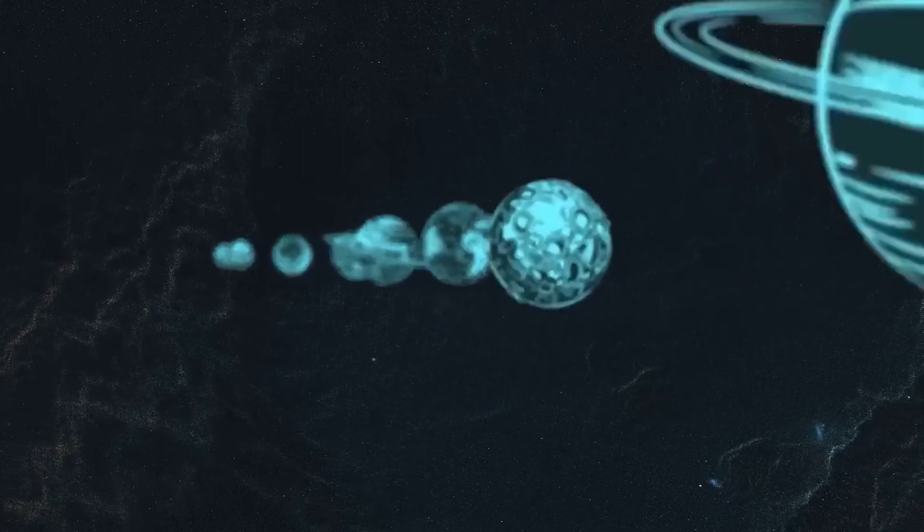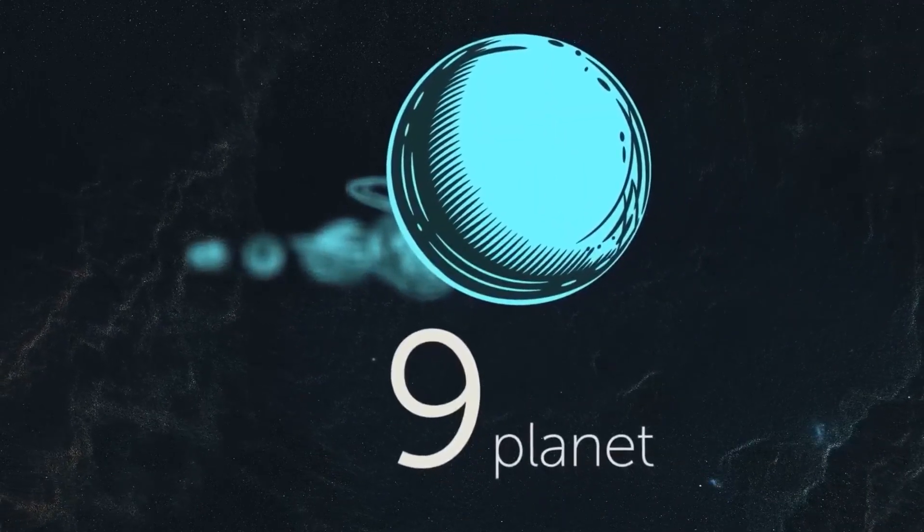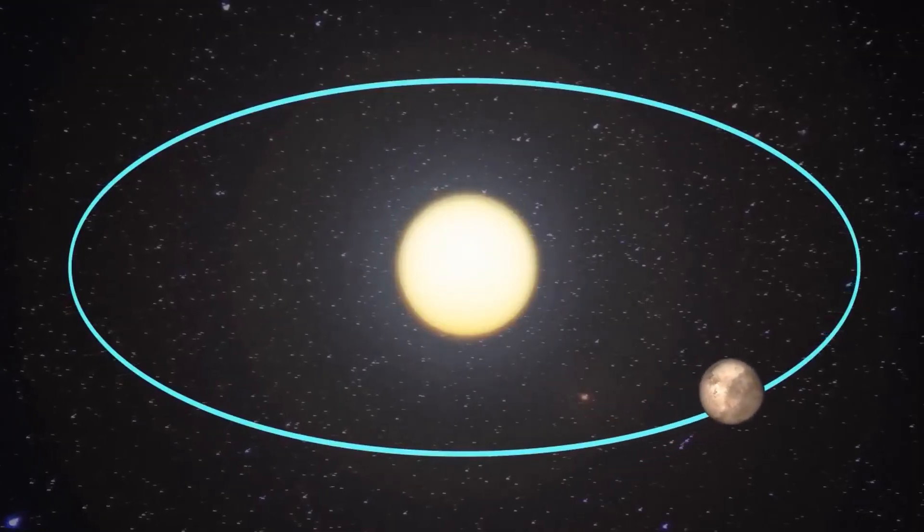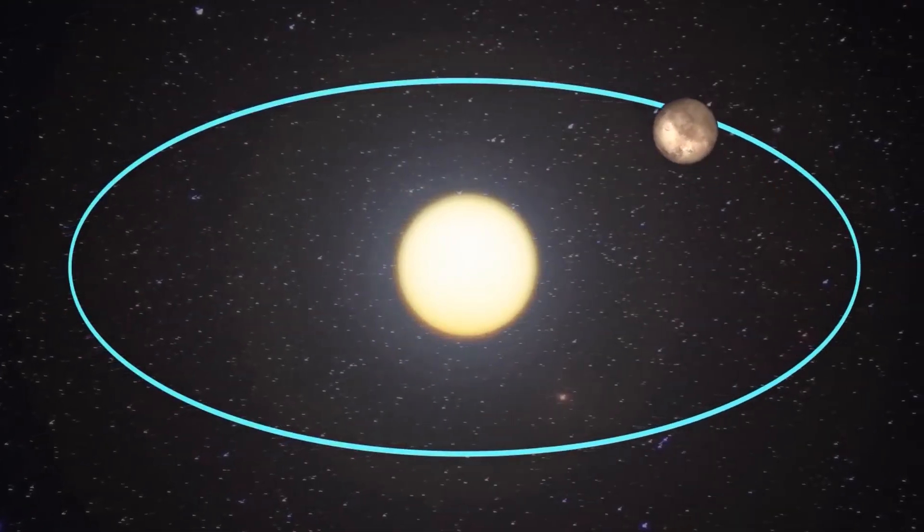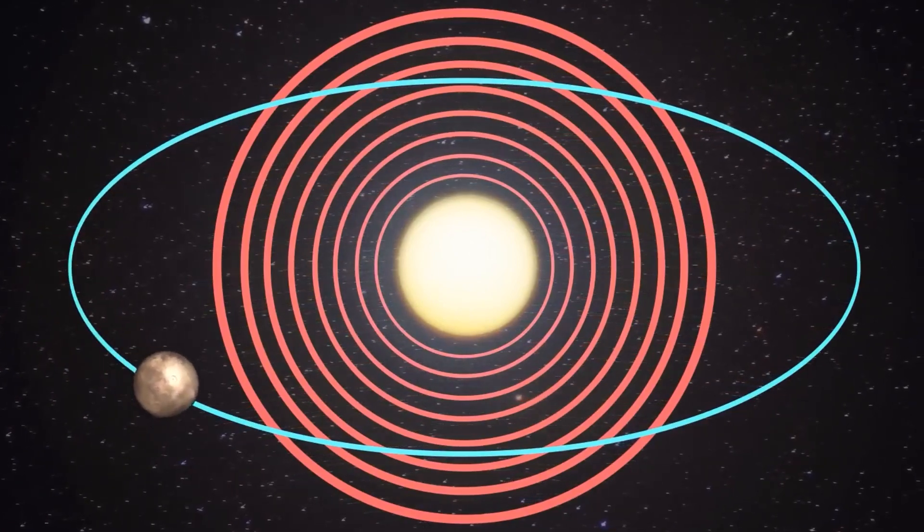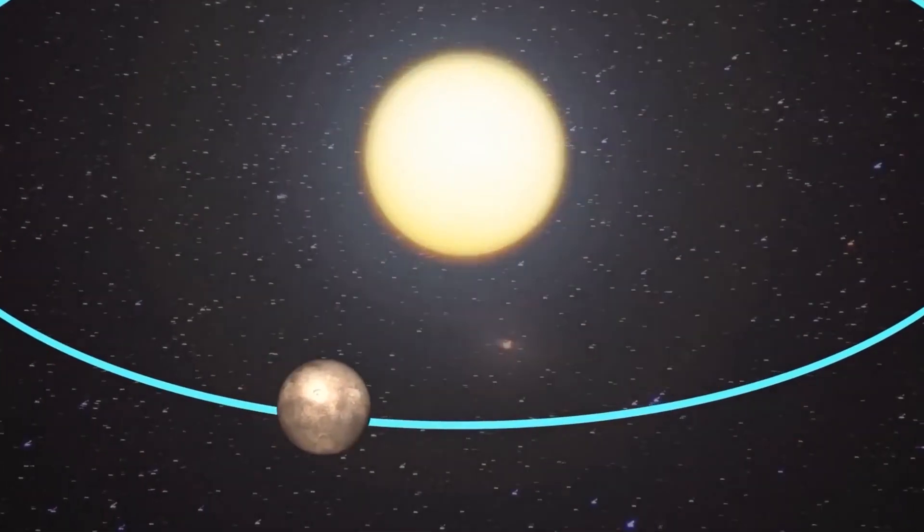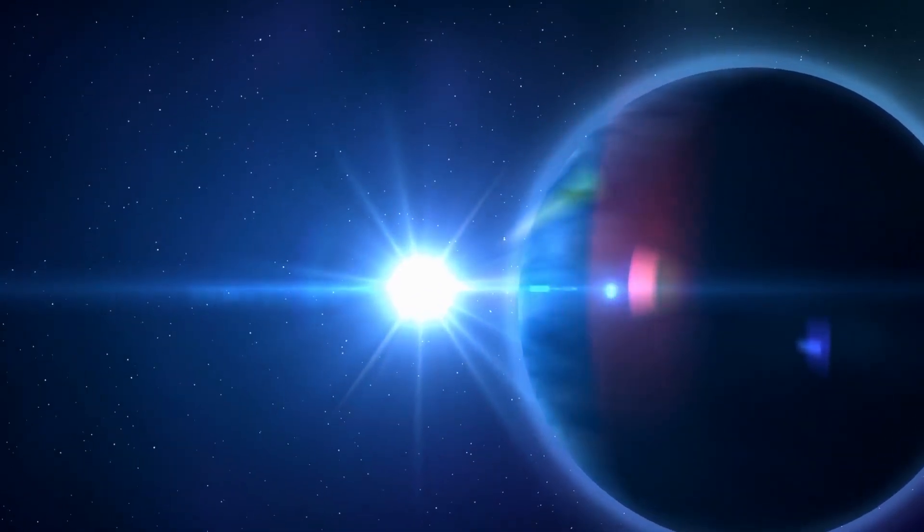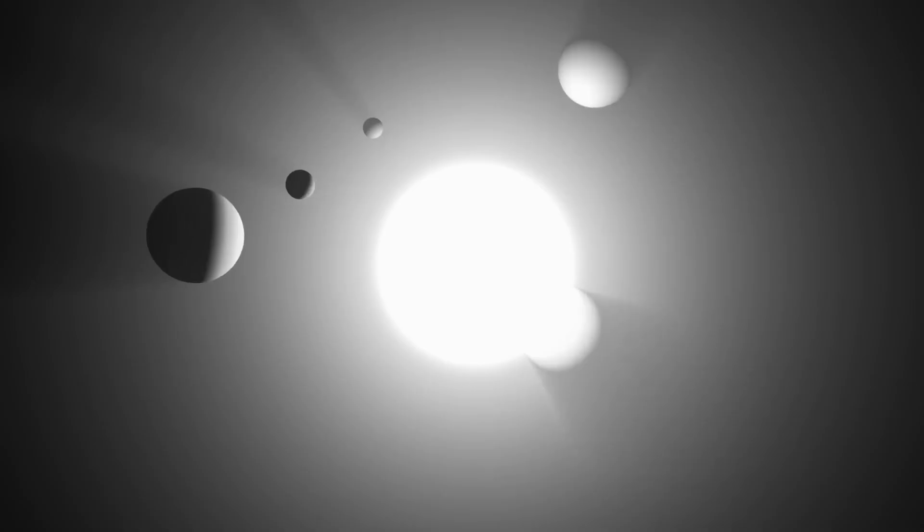Some scientists believe that a Planet 9 could explain strange things happening in our solar system. Now, why couldn't we find it? Well, one reason is that if Planet 9 existed, it would likely be a small and extremely cold world. It wouldn't give off much heat or light, making it hard to spot with our telescopes, especially if it was far from the Sun. So, maybe it just wasn't there.